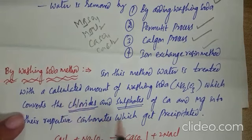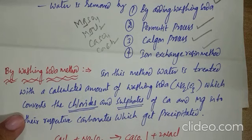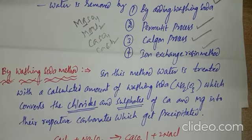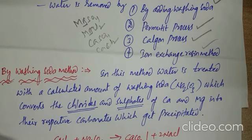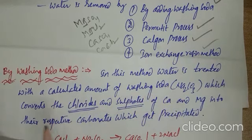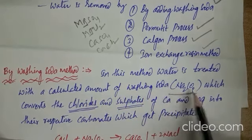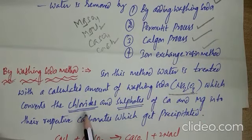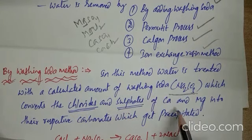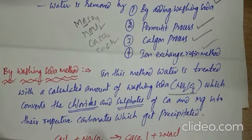One special point: by using washing soda, we can remove temporary hardness as well as permanent hardness. This bit is repeated in competitive examinations — which of the following substances is used for removal of temporary hardness as well as permanent hardness? The answer is washing soda. In this process, water is treated with a calculated amount of washing soda, which converts whatever chlorides, sulfates, and bicarbonates of calcium and magnesium are present into insoluble carbonates.